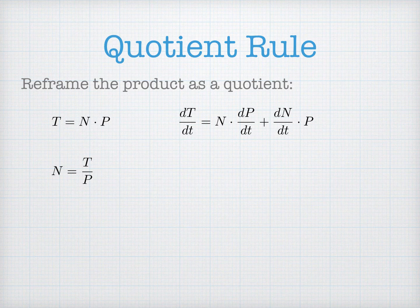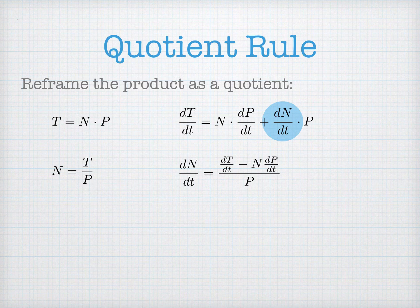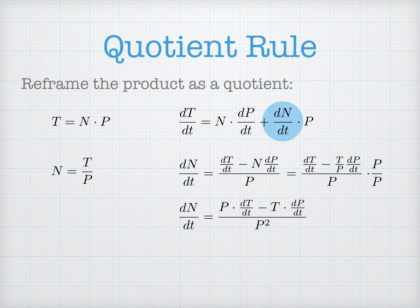So if I'm interested in finding the rate of change of Nutella per pancake, I can solve for dn/dt from my original equation. If I subtract n times dp/dt and then divide by p, I get the equation for the rate of change of my Nutella per pancake. I don't want n in the equation, so let's write it in terms of t and p by substituting n = t/p. It's not ideal to have fractions inside fractions, so let's multiply the numerator and denominator both by p. That allows us to rewrite the equation: the rate of change of my Nutella per pancake equals p times dT/dt minus t times dp/dt, all over p squared. This is the quotient rule.